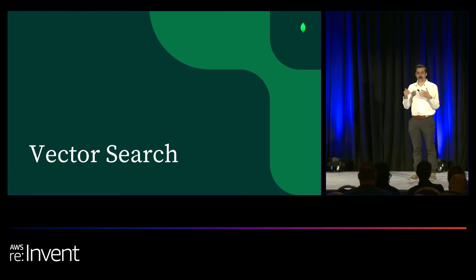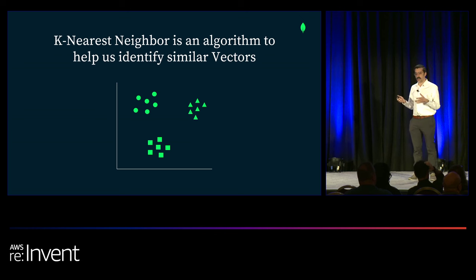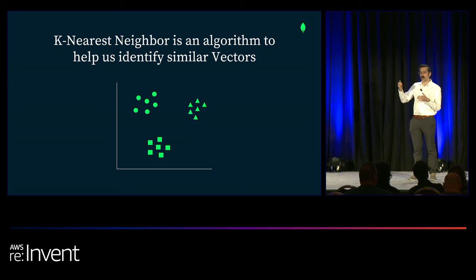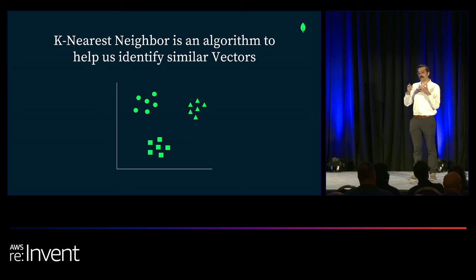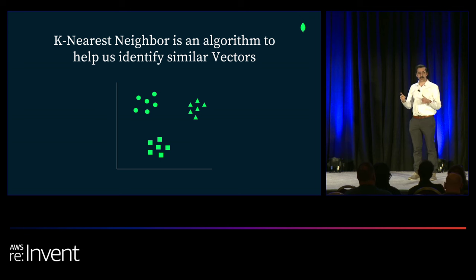All of that brings us to vector search — how do we make use of these vectors and the relationships that are there. This is typically done using an algorithm called k-nearest neighbors. When we say k-nearest neighbors, we often mean exact — find the total set of nearest neighbors ordered by distance from what you're looking for, scanning all of them. For exact nearest neighbor search, that means needing to scan through all of your data and compute the distance from your target vector to each vector in your collection. It's powerful and useful on small data sets, but can start to struggle at scale.